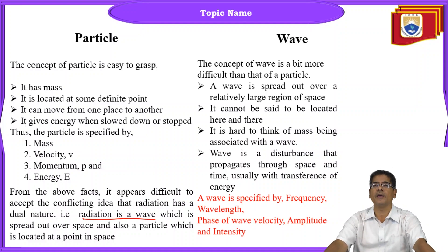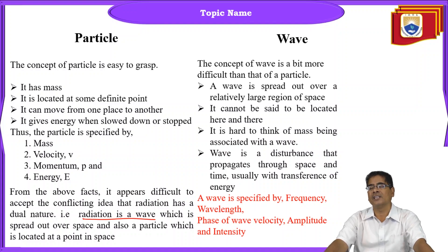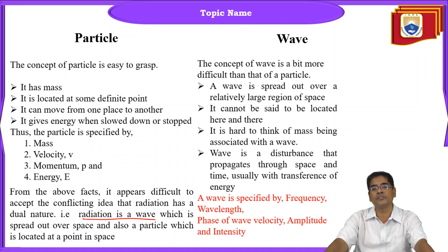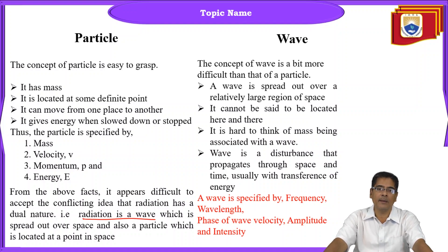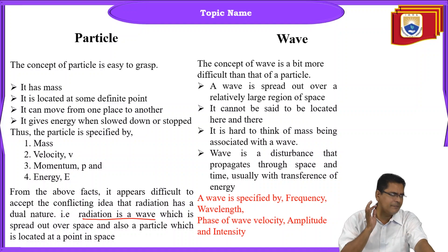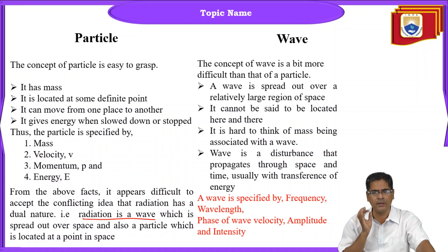A wave can be specified by parameters such as frequency, wavelength, phase velocity, group velocity, amplitude, and intensity. A wave is spread out over a relatively large region of space, cannot be located at a certain point, and we cannot find its exact position and momentum. A wave is a disturbance that propagates through space and time, usually involving transference of energy.